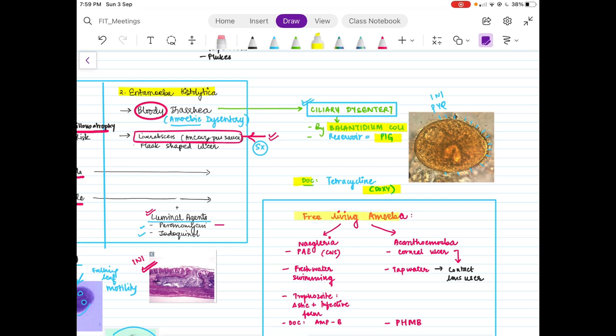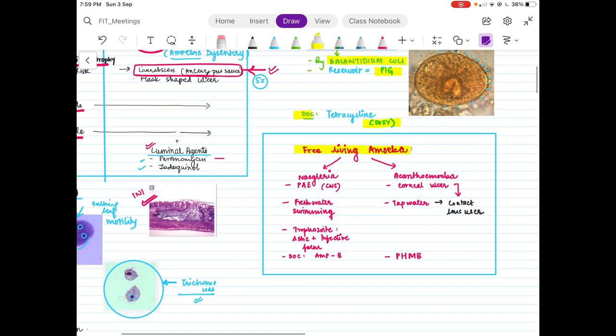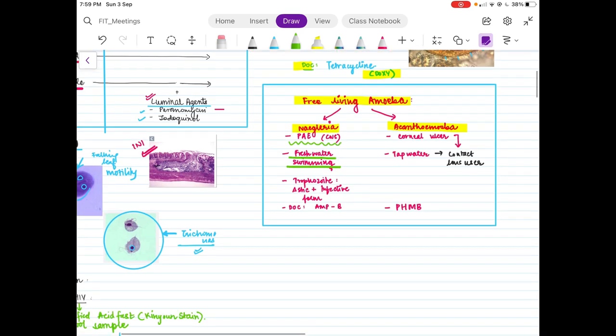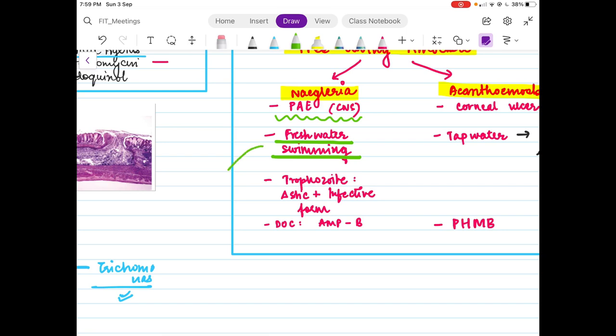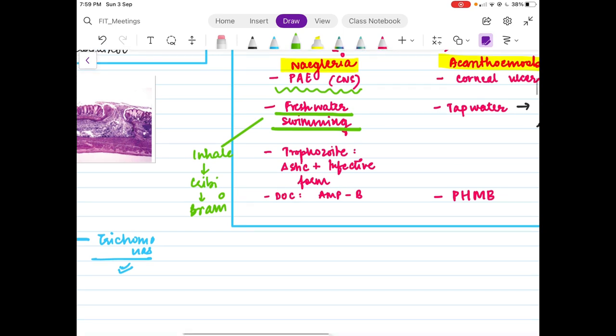Along with this, do read the free-living amoeba as questions are also asked. There are two free-living amoeba: Naegleria and Acanthamoeba. This causes a CNS disease which is known as primary amoebic encephalitis caused due to freshwater swimming. There's only one form, that is trophozoites, which comes to humans. You inhale this form and then it goes through your cribriform plate to the brain. The trophozoite is the diagnostic and infective form. The drug of choice is amphotericin B.